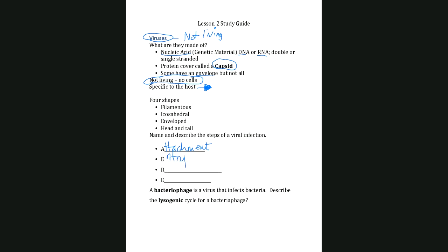After attachment, the genetic material — DNA or RNA — enters the host cell. Then replication of the viral genome occurs, and the host cell's machinery is used to assemble new virus particles. Finally, egress means the virus exits the cell to infect other cells. This can happen by lysis — the cell bursts and releases virus particles — or by budding out of the cell, which does not harm the cell, depending on the virus.